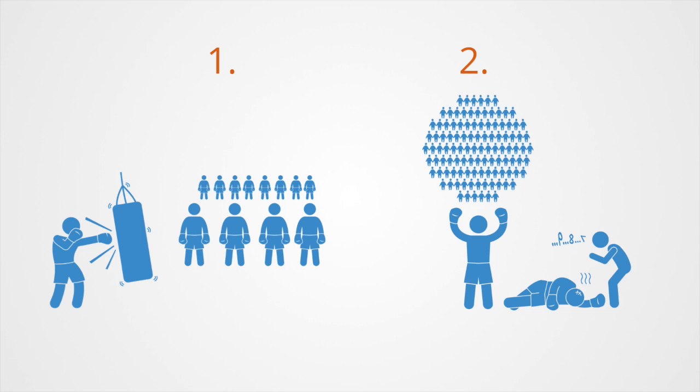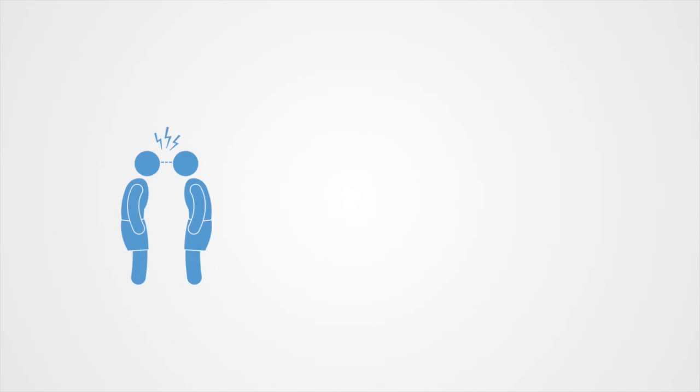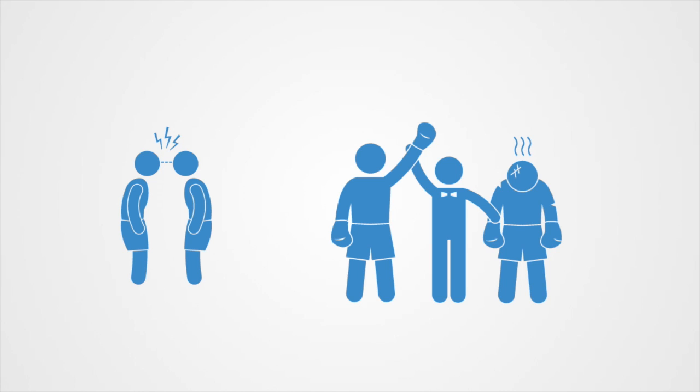This in turn means that the strategy must be successful when it contends with others exactly like itself. A stable strategy in an evolutionary game does not have to be unbeatable.